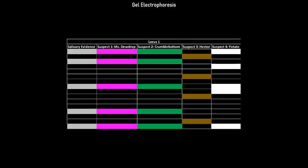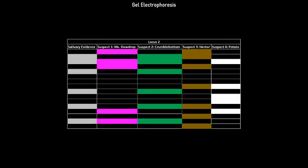The results from the completed gel for loci 1 is depicted. In loci 1, both Ms. Dewdrop and Crumblebottom match the salivary evidence, suggesting either could be the culprit. This overlap is a product of genetic similarity because Ms. Dewdrop is Crumblebottom's biological mother.